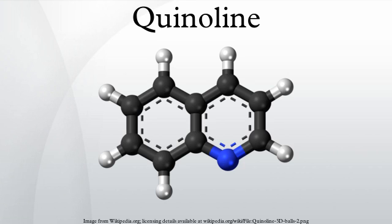Quinoline is readily degradable by certain microorganisms, such as Rhodococcus species strain Q1, which was isolated from soil and paper mill sludge. Quinoline is present in small amounts in crude oil within the virgin diesel fraction. It can be removed by hydrotreating, often with a nickel molybdenum on alumina catalyst.